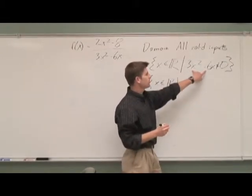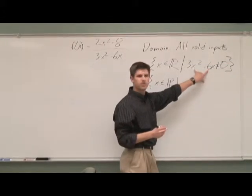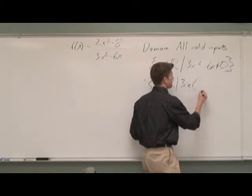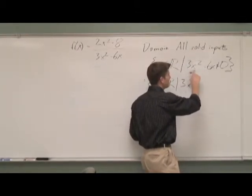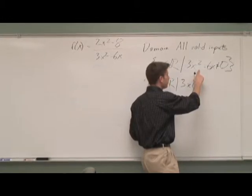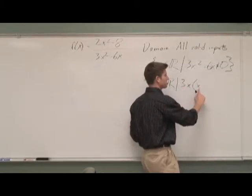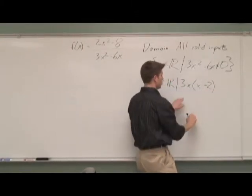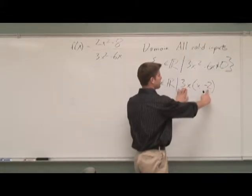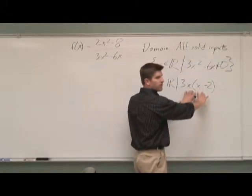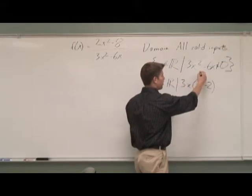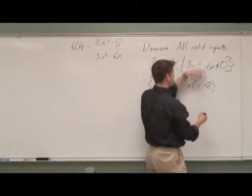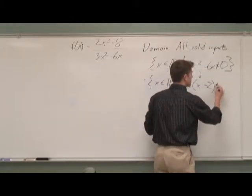I'm going to factor the denominator. What common factors do these two terms have? Three and x. So the denominator 3x² - 6x factors as 3x times (x - 2). Notice that 3x times (x - 2) gives us 3x² - 6x. The way to double-check factoring is distributing — going down is factoring, going back up is distributing, and you should get back to where you started.